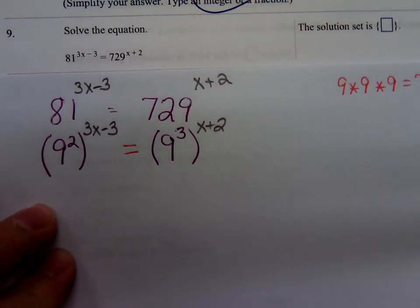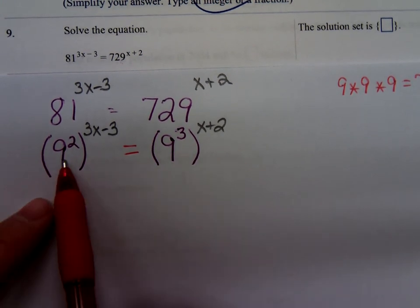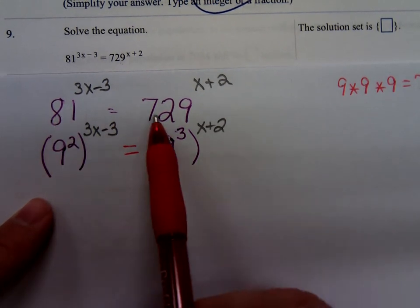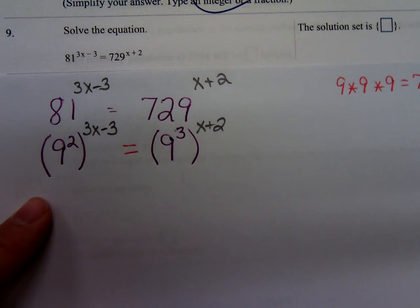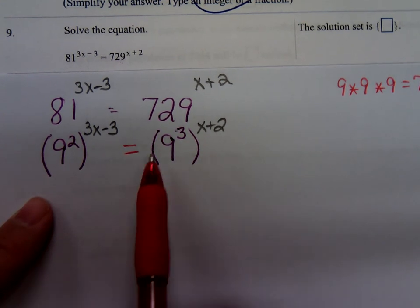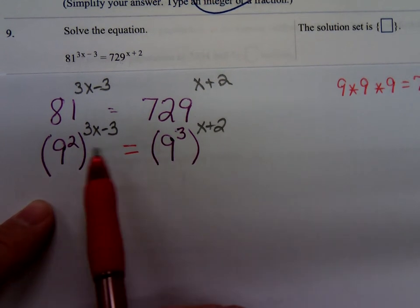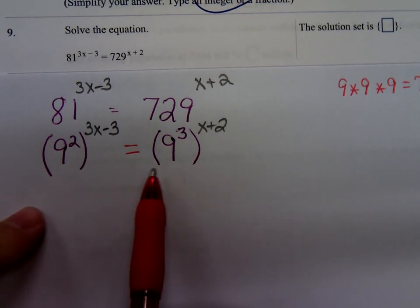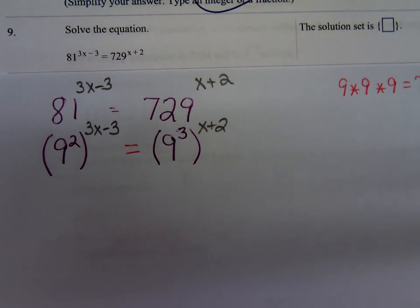Someone just asked, could we have used a different base like 3? And the answer is yes. 3 to the 4th would give you an 81. And over here, how many 3's would you need to multiply together to get a 729? I think it's 6. So, you could use a common base other than 9 if you wanted on this. Your numbers are going to get a little larger then. I think I'll just stick with it the way I have it.